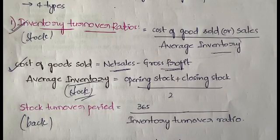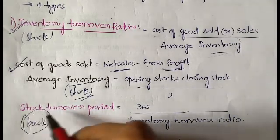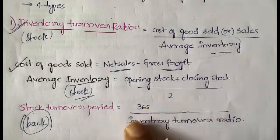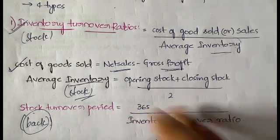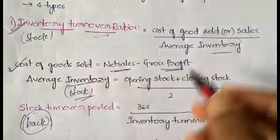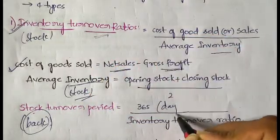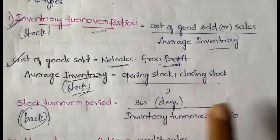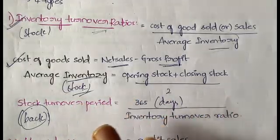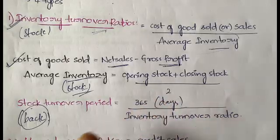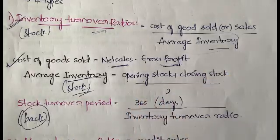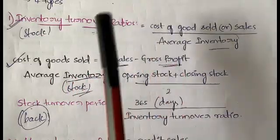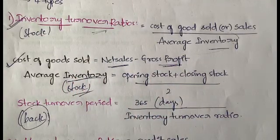The stock turnover period tells us after how much time you will get back your stock. It is calculated as 365 divided by the inventory turnover ratio. So 365 days divided by the inventory turnover ratio gives you the stock turnover period — the time it takes to get back the stock. That covers the inventory turnover ratio.